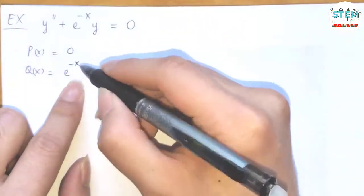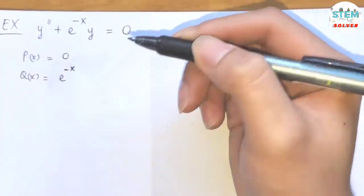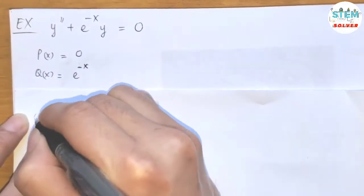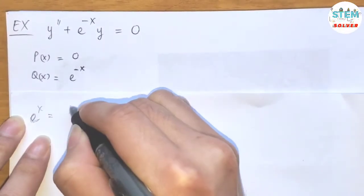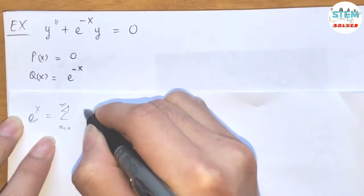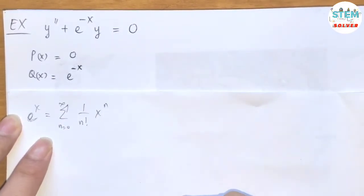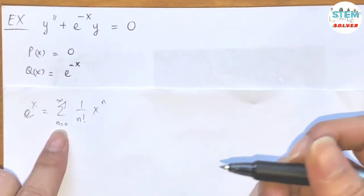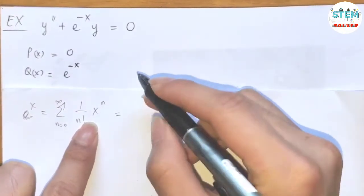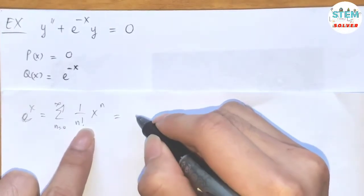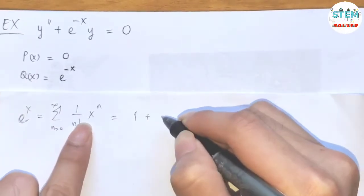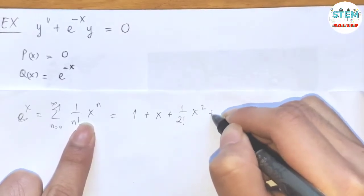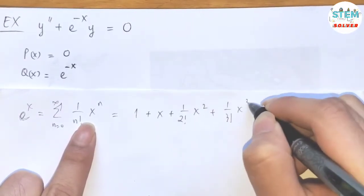So we have to expand this out. If you remember, e to the x is equal to the power series from 0 to infinity of 1 over n factorial times x to the n. If you write out the terms: plug in 0, you have 1; plug in 1, you have x; plug in 2, you have 1 over 2 factorial x squared; plug in 3, you have 1 over 3 factorial x cubed, plus dot dot dot.